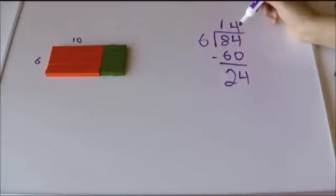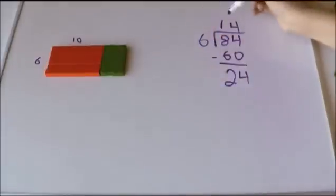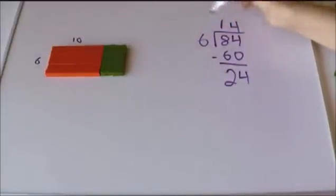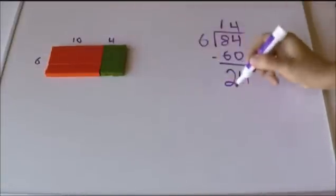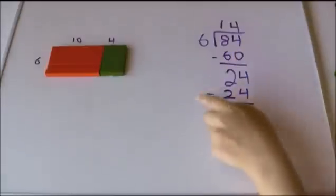And so I have, I had 24 down here and I took away 24. So 4 times 6, 4 times 6 is 24. That's how much I took away. So to show it in symbols, minus 24.